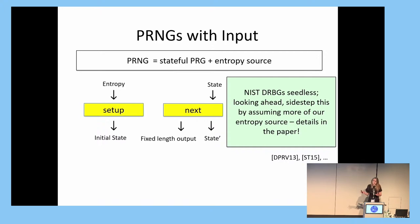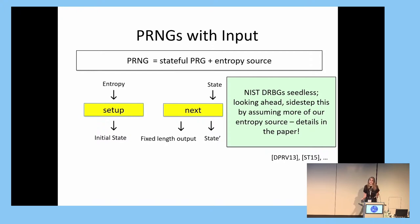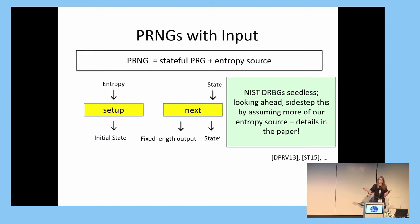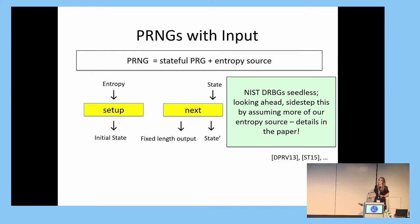There are well-known impossibility results that mean that if we want our PRNG to work with arbitrary and imperfect sources, we need to allow each of these algorithms to take as input a random seed, which crucially must be generated independently of the entropy source. As is common with real-world PRNGs, none of the NIST-DRBGs are specified to take a seed. We brush this issue aside for the rest of the talk, but we managed to sidestep these impossibility results because our analysis is in an idealized model, and we assume a bit more of the entropy source. Full details are given in the paper.